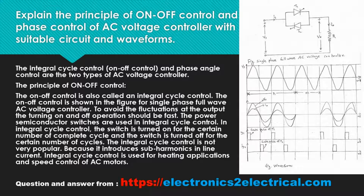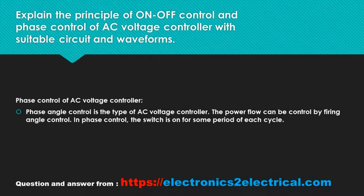Integral cycle control is used for heating applications and speed control of AC motors. Phase control of AC voltage controller. Phase angle control is a type of AC voltage controller. The power flow can be controlled by firing angle control.